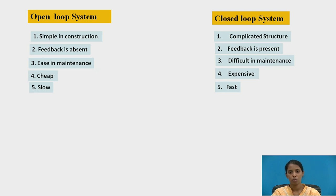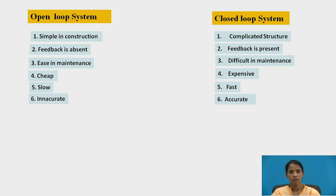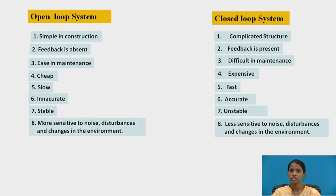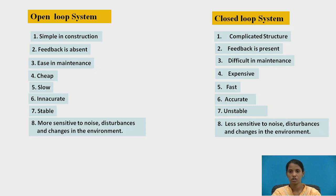Open loop systems are slow in operation, whereas closed loop systems are fast. Open loop systems are inaccurate because the output is not compared to the input, while in closed loop systems the output is compared to the input via feedback. Open loop systems are stable with no stability problems, whereas closed loop systems can be unstable. Open loop systems are more sensitive to disturbances and environmental changes, whereas closed loop systems are less sensitive.